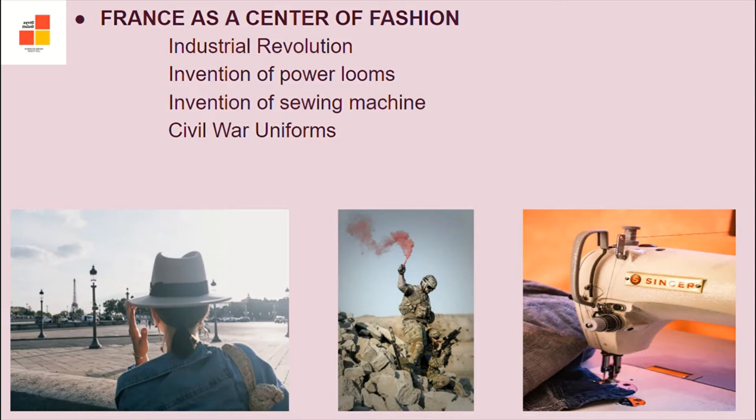The Industrial Revolution marked the beginning of technology in textiles. For example, power looms were invented, and then there was the invention of sewing machines by Isaac Singer. Long-wearing pants with pockets for tools were also introduced. In 1880, women started wearing separate skirts and blouses, so mix and match started — this is how Paris became the hub of fashion.